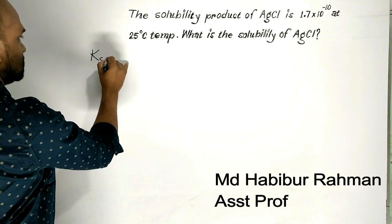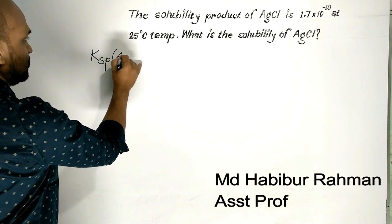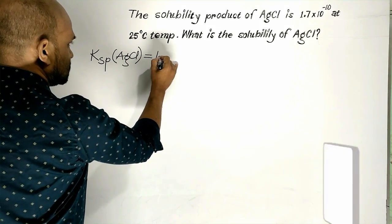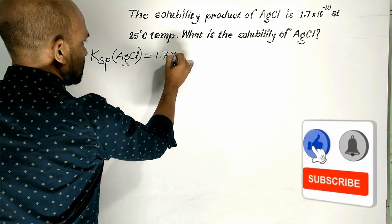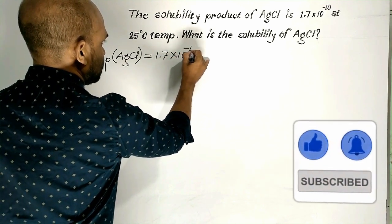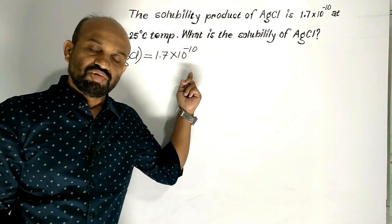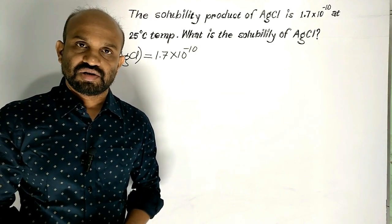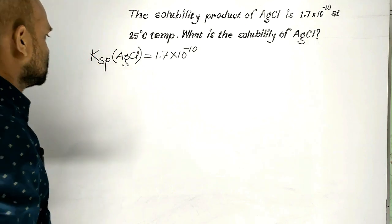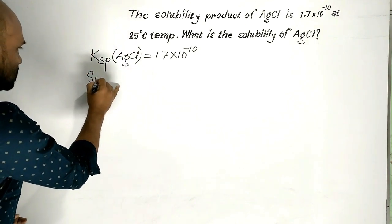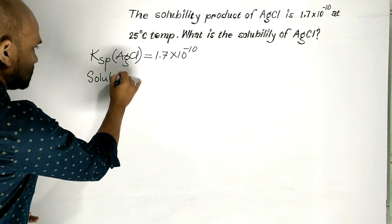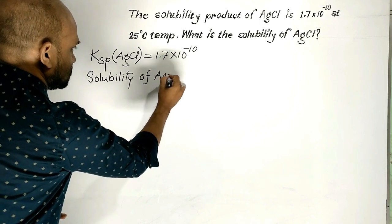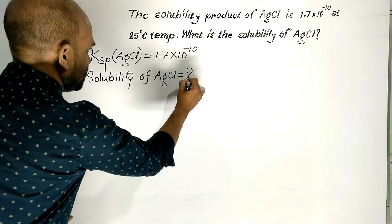The solubility product of silver chloride has been given and this is 1.7 times 10 to the power minus 10. No unit is used here because the unit of solubility product is different for different reactions. Here we have to calculate the solubility of silver chloride.